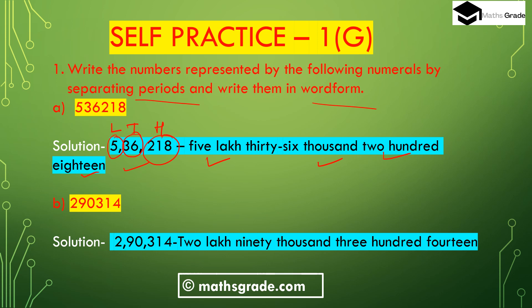Part (b): the number is 290314. We have to write this number using periods and in word form. Starting from the right hand side, we place three digits after comma — 314 is the hundreds place — then 90, two digits in the thousands place, and 2 is in the lakh place. So the number in word form is two lakh ninety thousand three hundred fourteen.